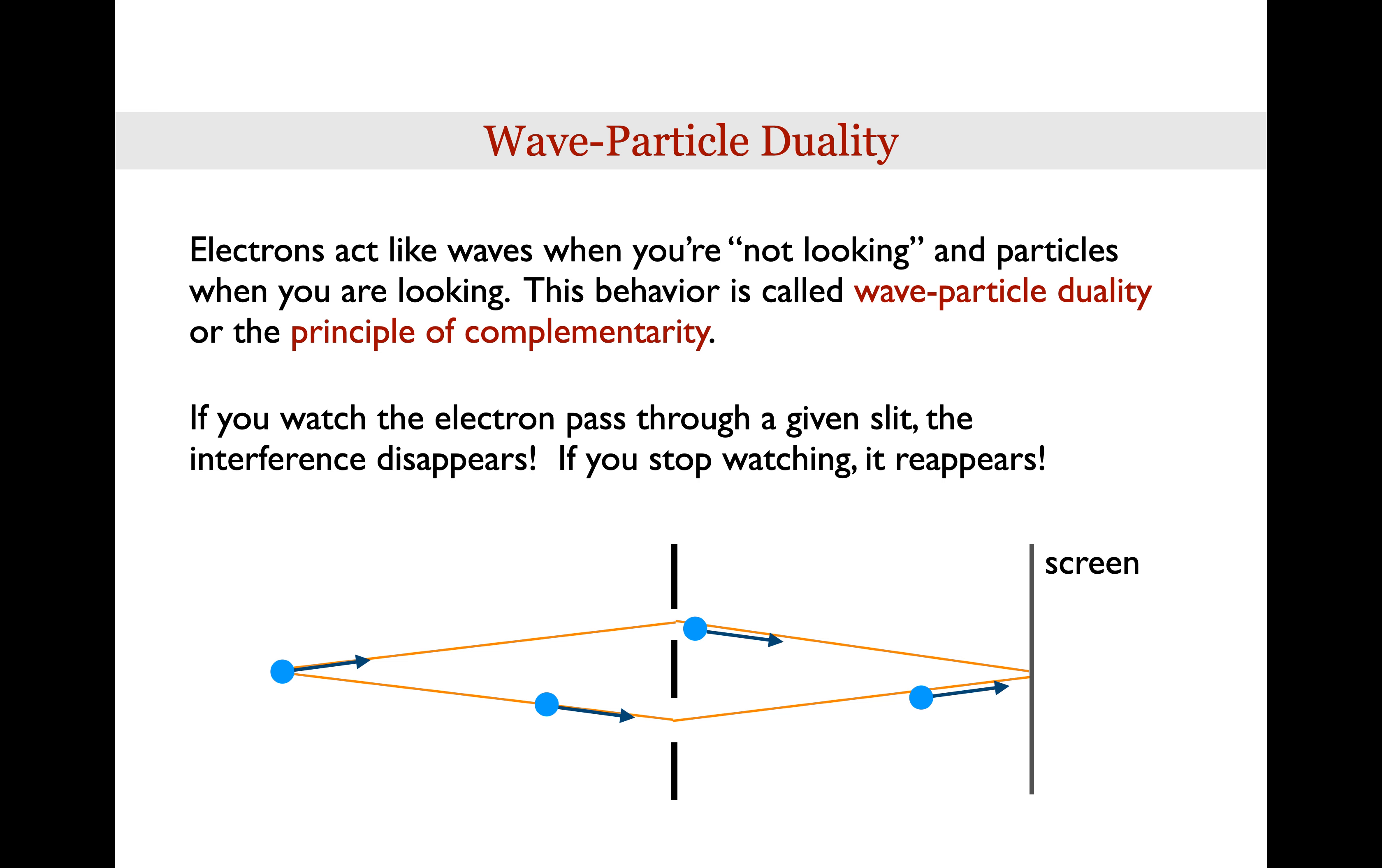If you watch the electron pass through a given slit, so if you put some detector right near one of the slits so that you can measure the electron when it goes through one slit or another, then the interference pattern disappears. Let's say that again. If you can tell which slit the electron goes through, then you're forcing it to act like a particle the whole time and the wave nature of the electron disappears and it just acts like a particle. You don't see the interference pattern on the screen. But if you don't watch the slit, then the electron wants to behave like a wave, it passes through both slits somehow, interferes with itself, and the interference pattern on the screen re-emerges.